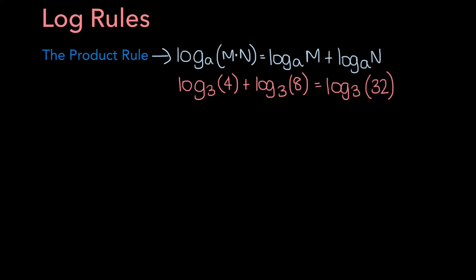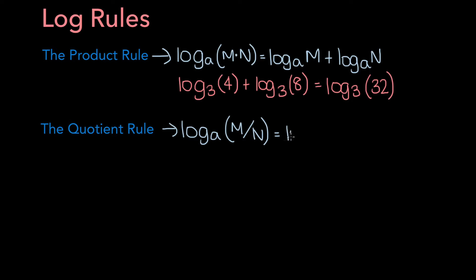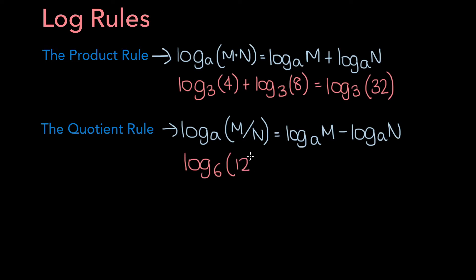Now let's consider the second big log rule: the quotient rule. The quotient rule states that if you have the log base a of m divided by n, this is equal to the log base a of m minus the log base a of n. For example, if you had the log base 6 of 12 minus the log base 6 of 3, this is equal to the log base 6 of 12 divided by 3, which is 4.